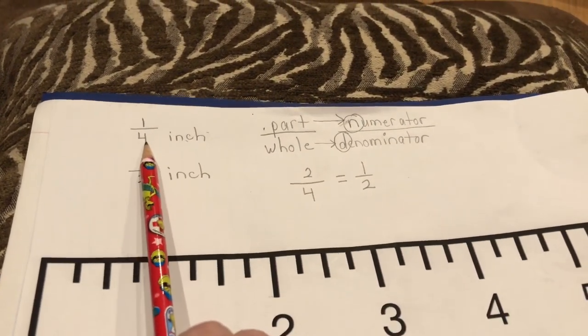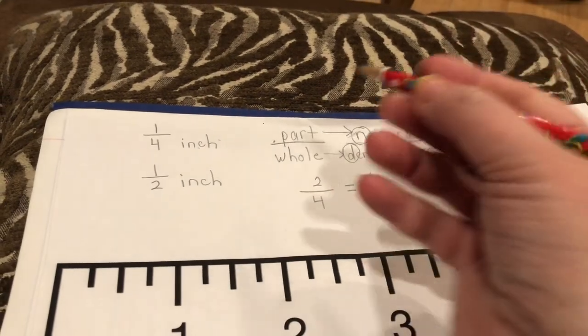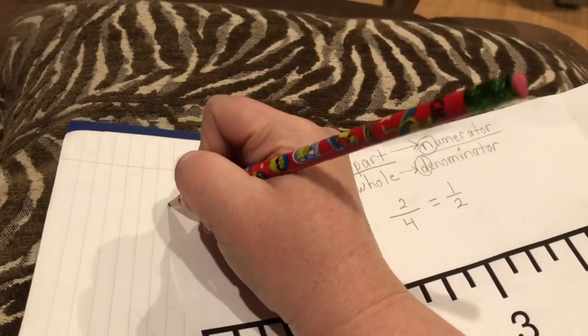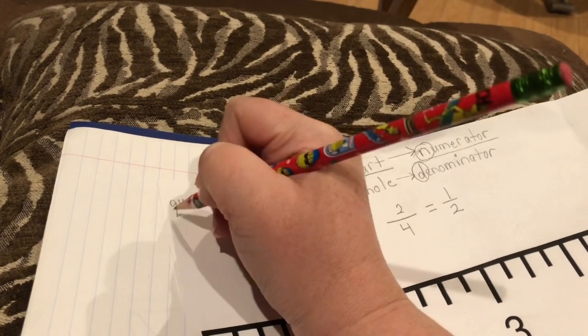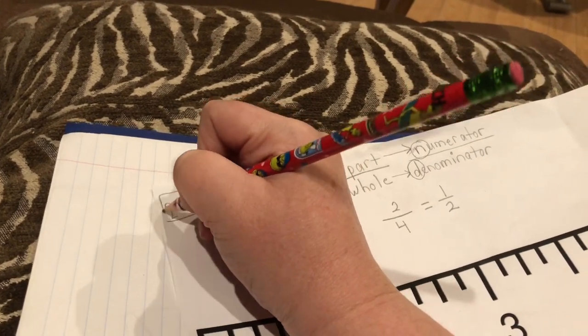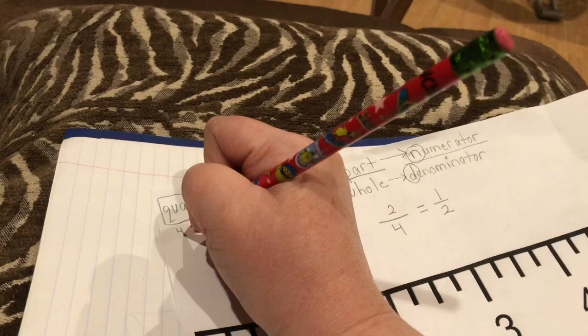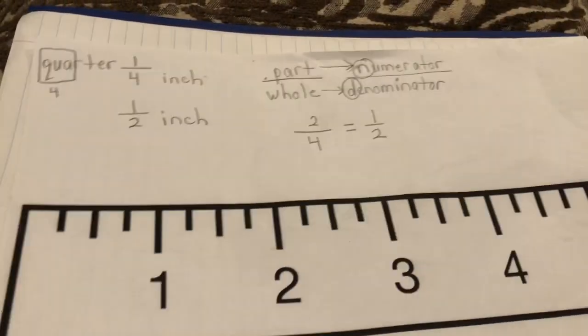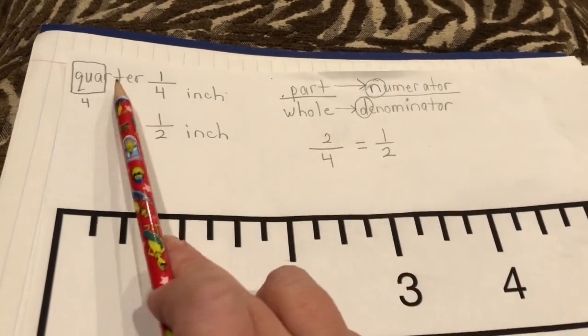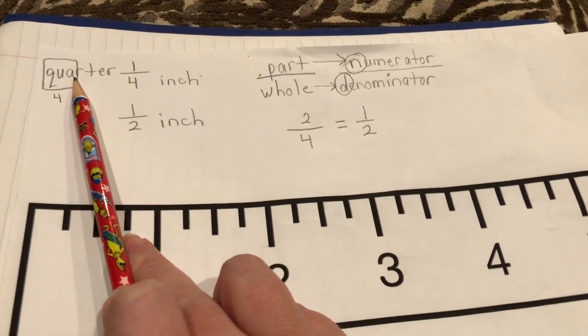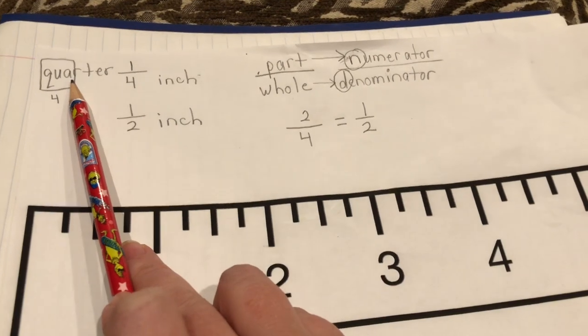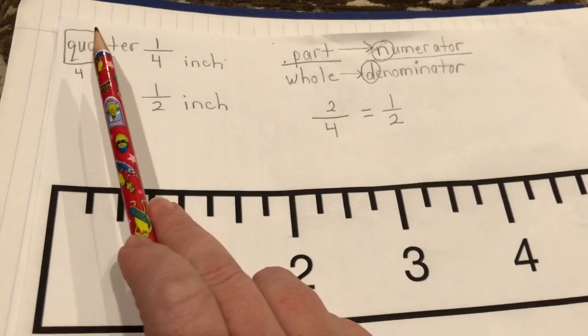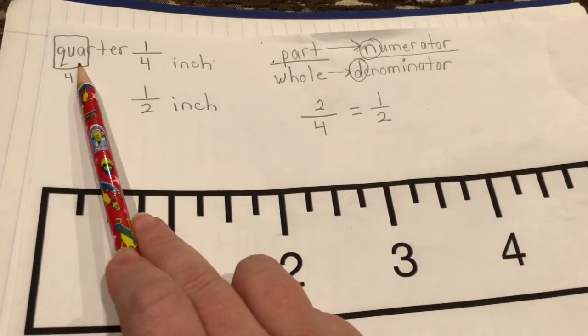So a quarter inch, we've always talked about how Q-U-A or Qua always means four pieces. So it takes four quarters to make a dollar. It takes four quarts to make a gallon. And if I do a quadruple flip, I do four flips.